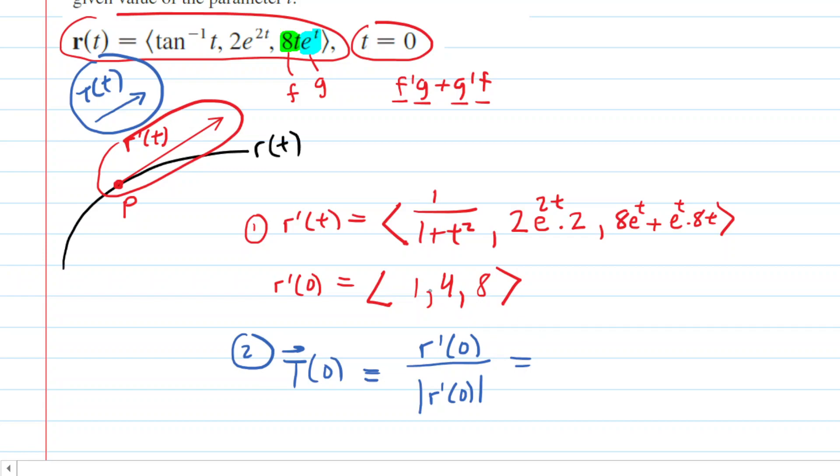In the numerator, we already have our tangent vector, that's just 1, 4, 8. And then to divide by the magnitude means we take the square root of the sum of the squares of the components. So we would have 1 squared plus 4 squared plus 8 squared.